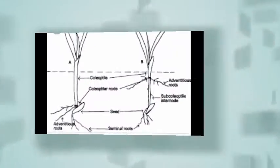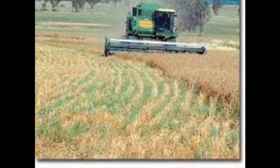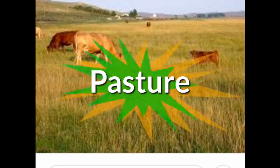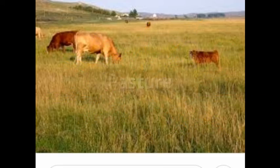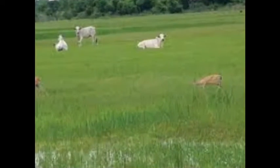In all pastures, overgrazing must be avoided. If too many animals graze in an area of pasture, they trample and destroy the plant. The soil surface is consequently subjected to erosion. Types of pastures: natural pastures need no cultivation; it is the main vegetation of the savannah areas.